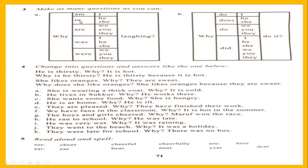Remember: we use 'am' with I, 'is' with he and she, 'are' with we, you, they. When you are making a question, always remember the pronouns we, you, they — when making a question using these pronouns, you use 'are' because these pronouns mean plural. He and she are singular, 'is.' And 'am' for I is an exceptional case. Why am I laughing? Why is he laughing? Why are they laughing? It is wrong if you say 'why is they laughing.'